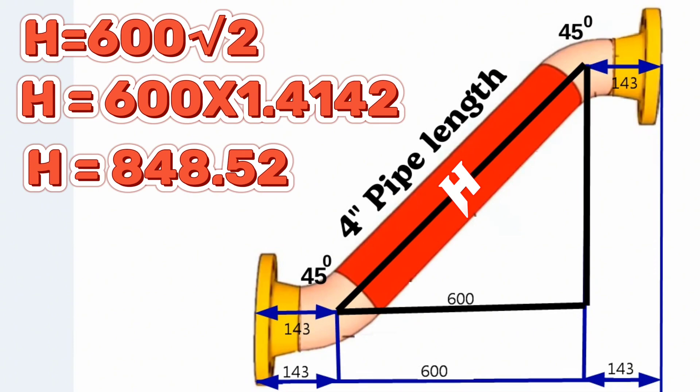At last, we found length of hypotenuse or 45-degree elbows, approximately 849 millimeters.